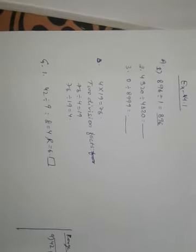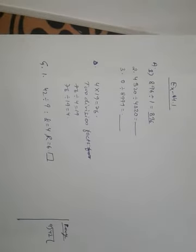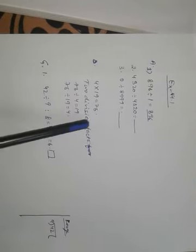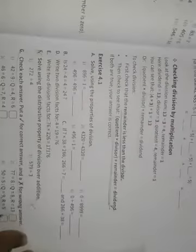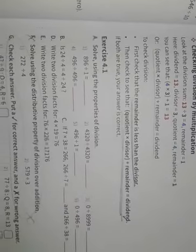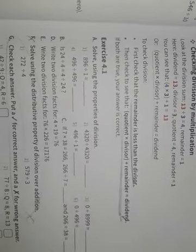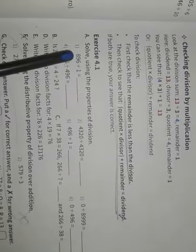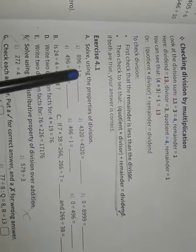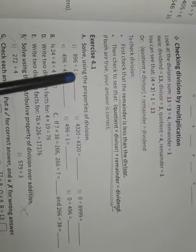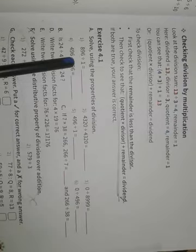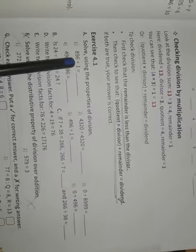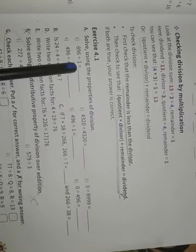Continuing from Exercise 4.1, question number one — solve using the division property. The first question is 9896 divided by 1. The answer is 896 again, because a number divided by one gives the number itself.